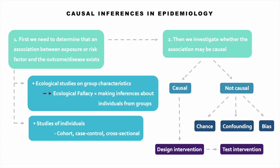Without data on the individual level, you often can't see the true relation between a risk factor and disease. An association can also be established with studies of individuals discussed in the previous class, including cohort studies, case control studies, and cross-sectional studies.